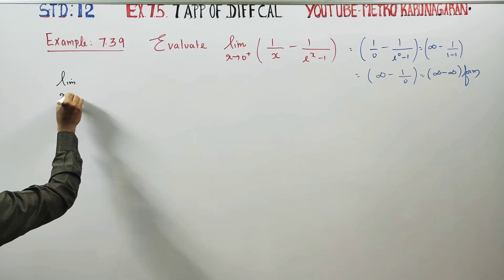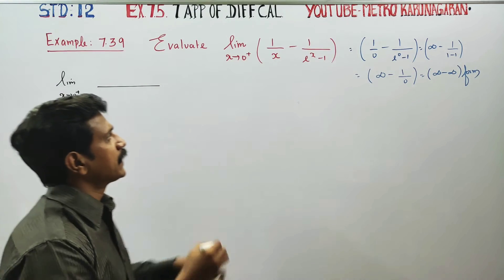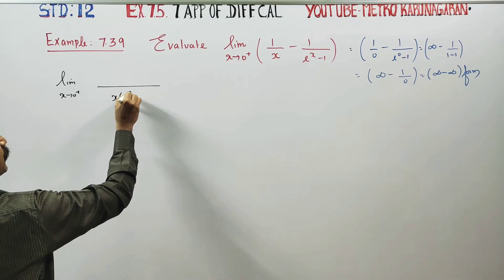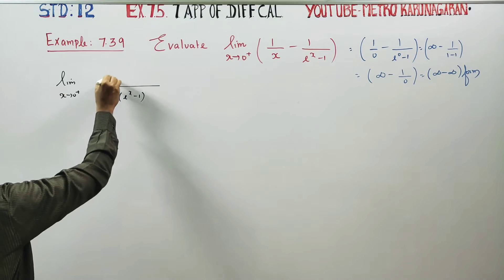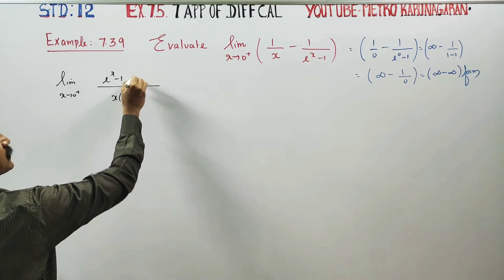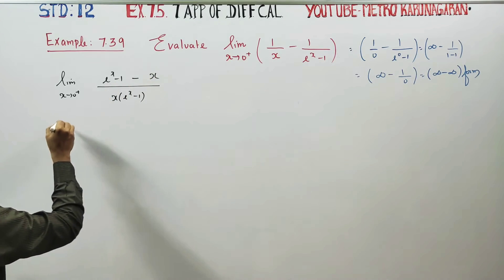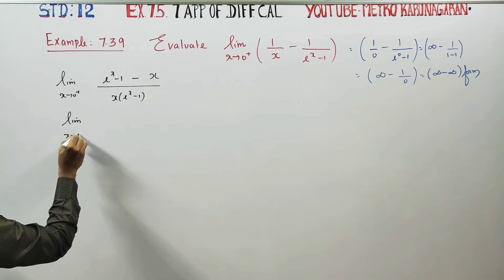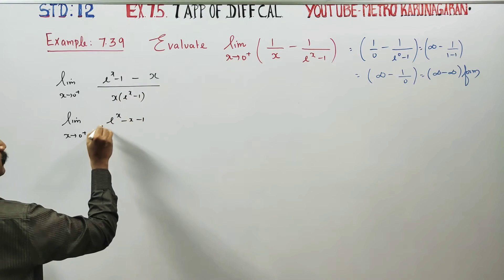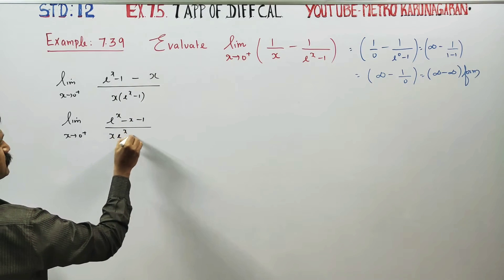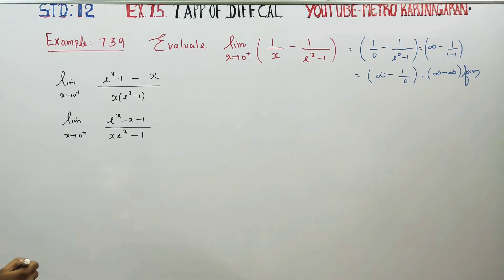Limit x tends to 0 plus — take the LCM of these two terms, which is x into (e power x minus 1). Cross multiply to get: e power x minus 1 minus x, all divided by x into (e power x minus 1). Simplify this expression.